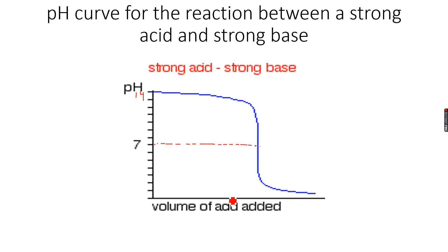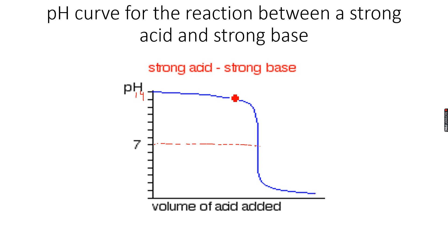At this equivalence point, the midpoint is almost seven, which shows that the equivalence point of a strong acid and strong base titration is at pH 7. This makes sense because a strong acid is reacting with a strong base. Why this equivalence point is important, we will cover in a while, but for now keep this in mind.